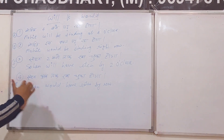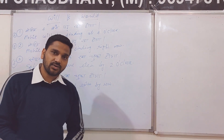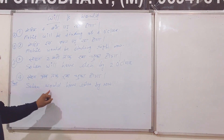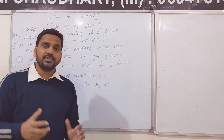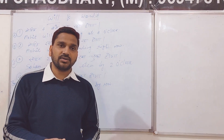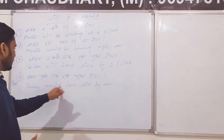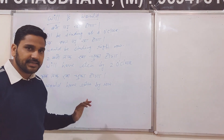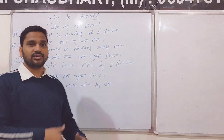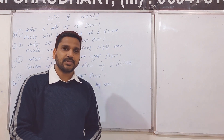Now if I change the same sentence — 'Sohan ab tak kha chuka hoga' — then it becomes: 'Sohan would have eaten by now.' Why? Because 'ab tak' (by now) gives a past or present sense, not a future sense. So when the Hindi sentence has a past or present sense even if the ending looks similar, we use Would instead of Will.